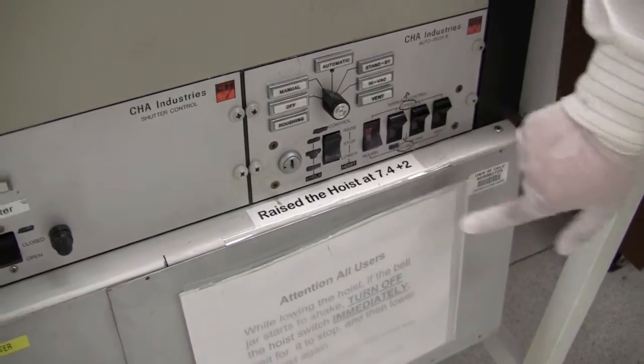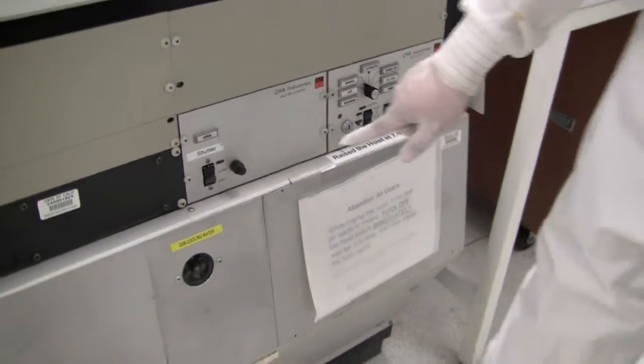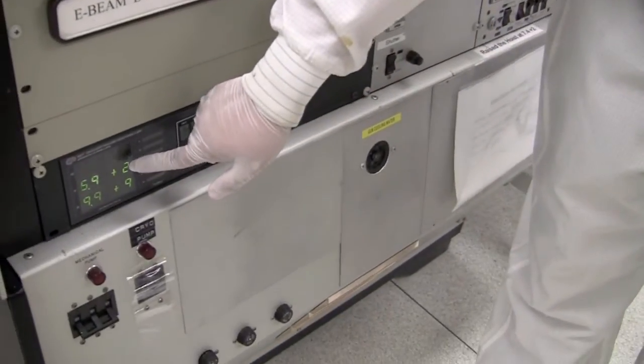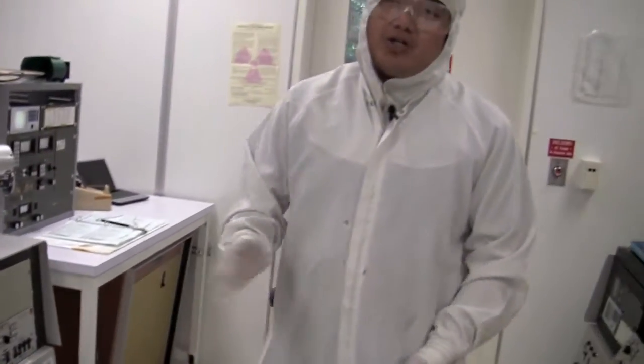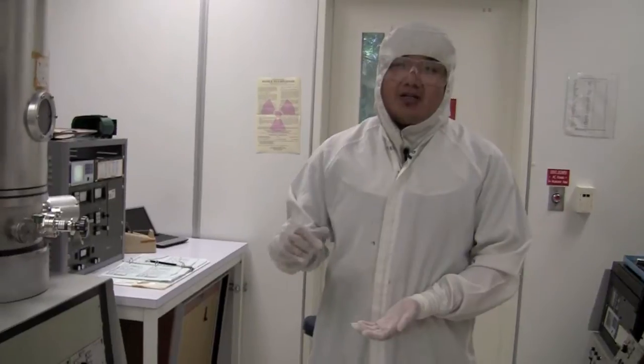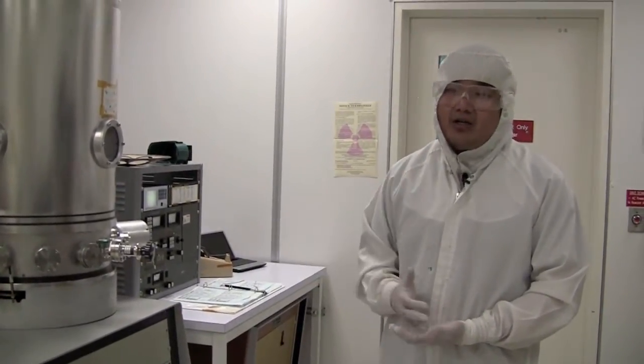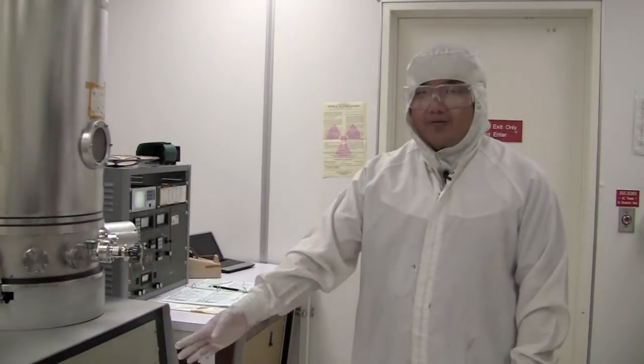We just turn it on, make sure the high vac and the vent is off. So we turn the roughing on and you should see the pressure decrease. We want to make sure that the pressure is less than 7 times 10 to the minus 2 before we turn the high vac on, but you can go a little even lower than that. So we'll wait a little bit for the pressure to drop.